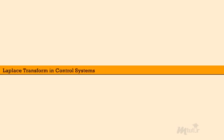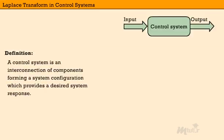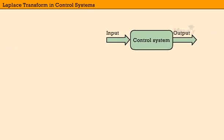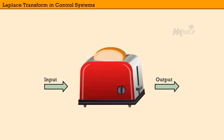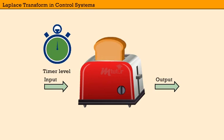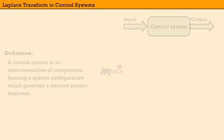Laplace Transform in Control Systems. A control system is an interconnection of components forming a system configuration which provides a desired system response. In simple terms, a control system takes in data as input, processes the data, and then sends out the desired output.